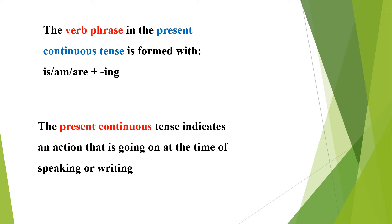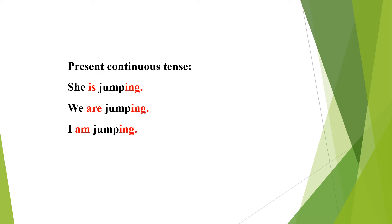You have to add ing with the base form. The present continuous tense indicates an action that is going on at the time of speaking or writing. For example, she is jumping. Here, 'is' is the helping verb and 'jump' is the base form — we add ing with the base form of the verb, so the sentence is: she is jumping.